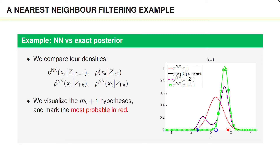Apart from these densities, the figure also shows the m_k plus one hypotheses at time k. We do this by plotting the m_k measurements and a circle that represents the hypothesis that the object is undetected. The circle is positioned at the predicted value of z_k, and the most probable hypothesis is marked in red.